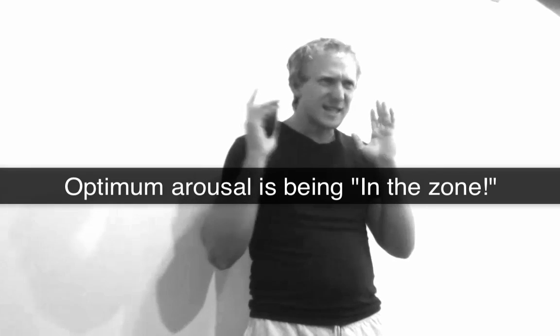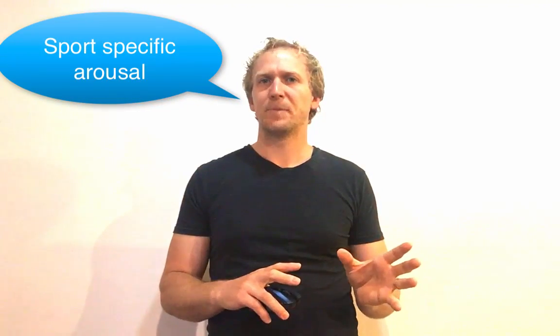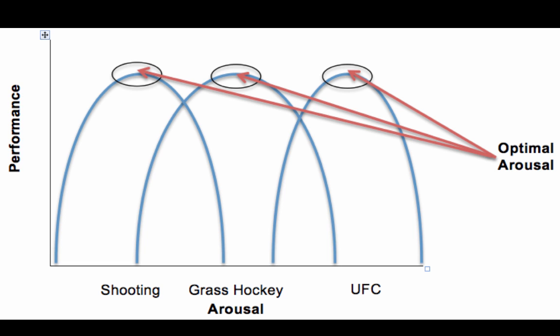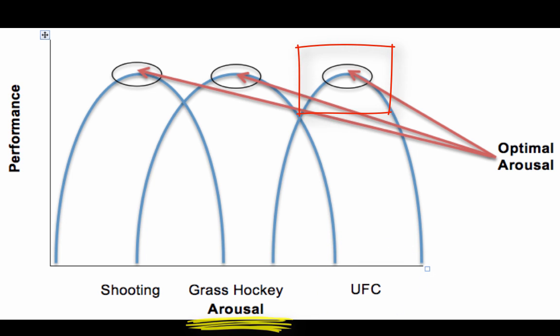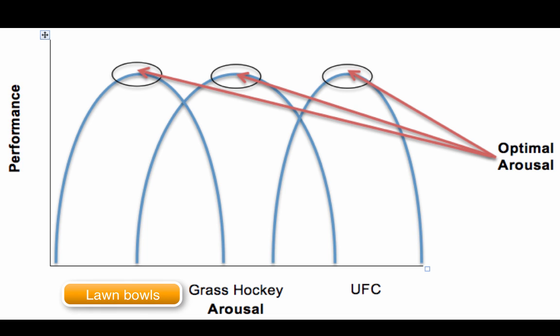Optimal arousal is about being 'in the zone' or getting psyched up for the game - specifically when you are focused and really ready to perform. Your level of arousal depends a lot on the sport. In UFC fighting, you need a very high level of arousal - blood pumping, very hyped up and alert to every movement. In contrast, lawn bowls requires a much lower level of arousal, as you need a more sustained, intense focus on a particular skill rather than fast reactivity.